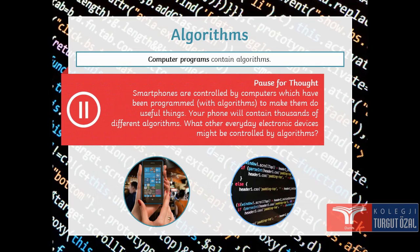Computer programs contain algorithms. Think about this. Smartphones are controlled by computers which have been programmed with algorithms, of course, to make them do useful things. Your phone will contain thousands of different algorithms. What other everyday electronic device might be controlled by algorithms?